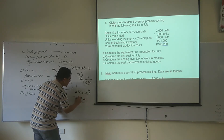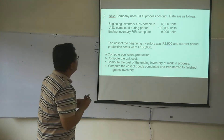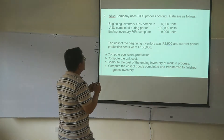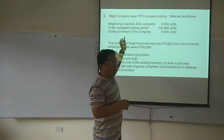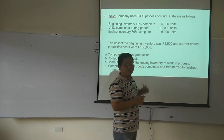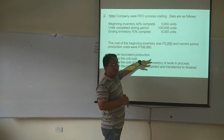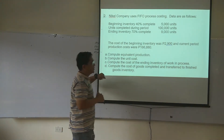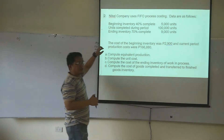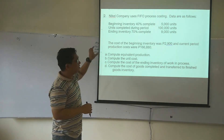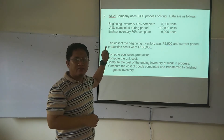The cost transferred to finished goods is 10,000 times the unit cost of $18, giving us $180,000. So Problem 2 — this time the method used is first-in, first-out. Problem 1 used weighted average; Problem 2 uses FIFO. The first requirement is to compute the equivalent units of production for the period.